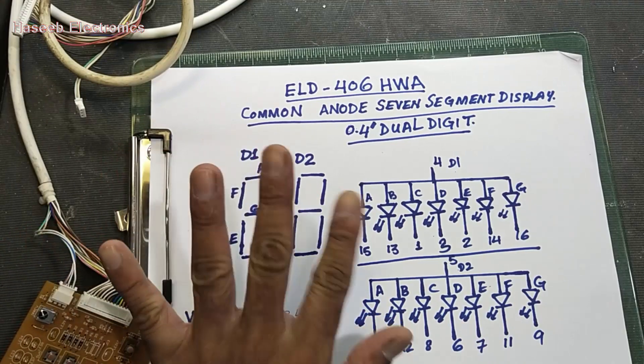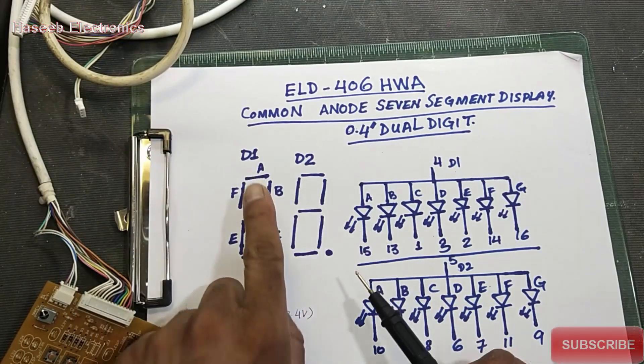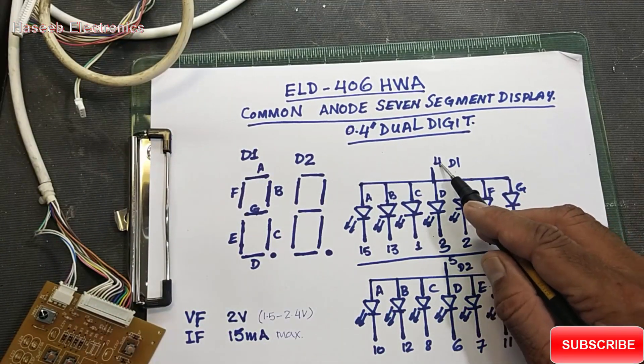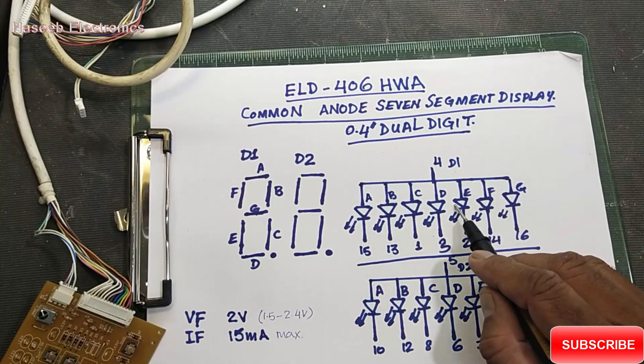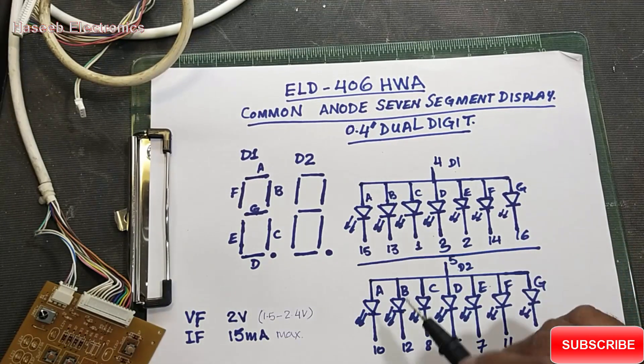This one and this one, D1 and D2. If we check D1, D1 common anode, we can see it has one, two, three, four, five, six, seven LEDs.